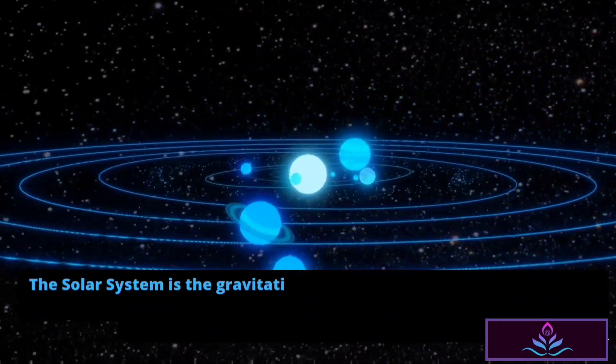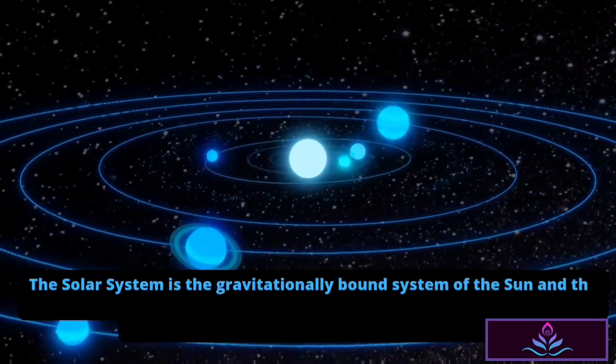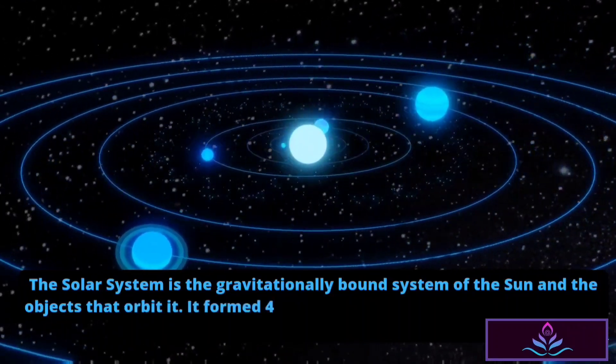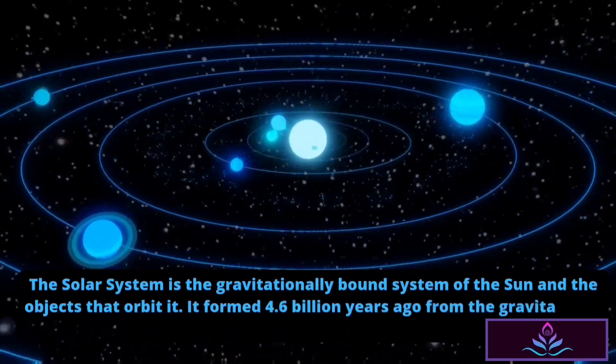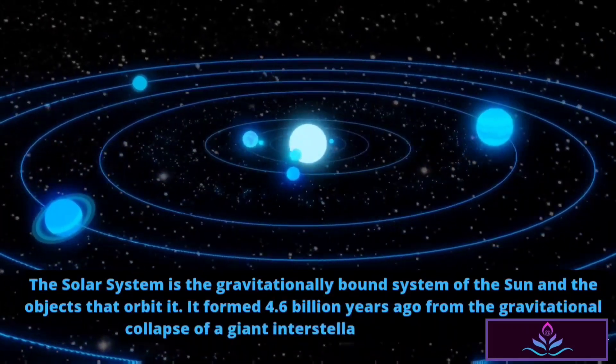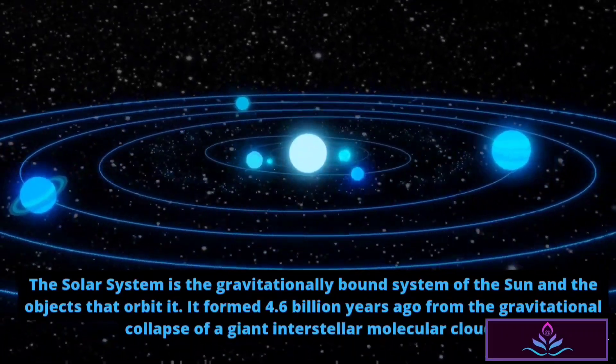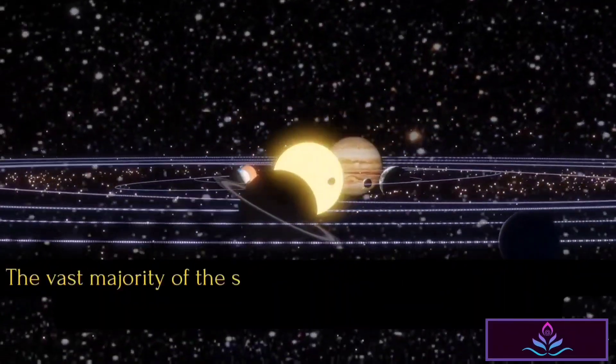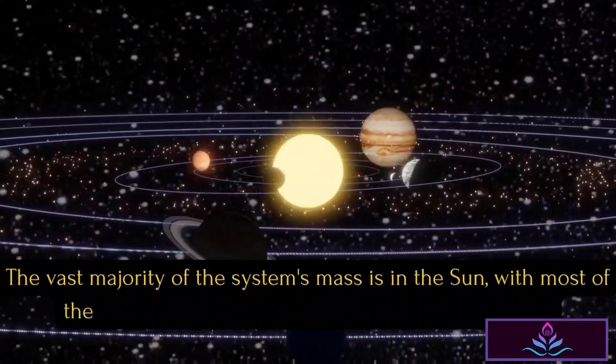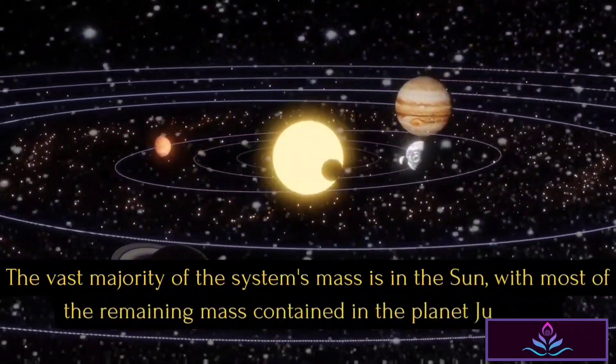The solar system is the gravitationally bound system of the Sun and the objects that orbit it. It formed 4.6 billion years ago from the gravitational collapse of a giant interstellar molecular cloud. The vast majority of the system's mass is in the Sun, with most of the remaining mass contained in the planet Jupiter.